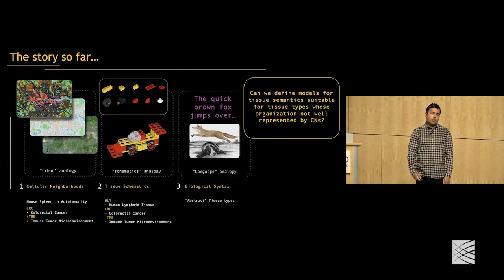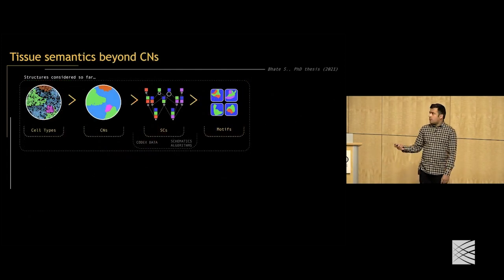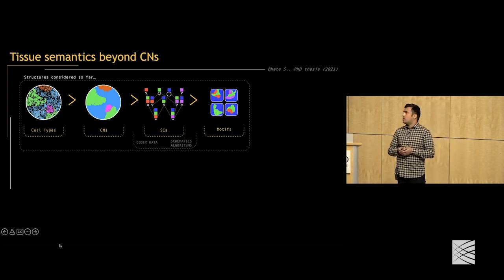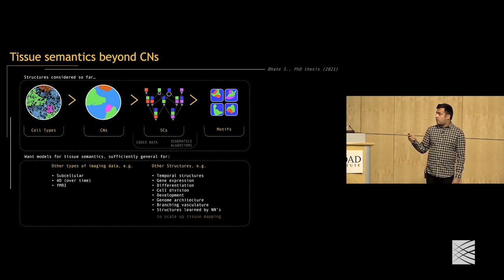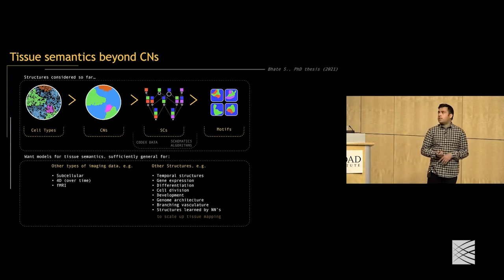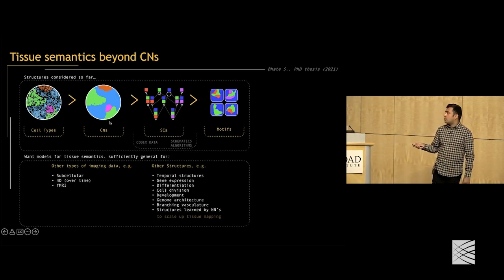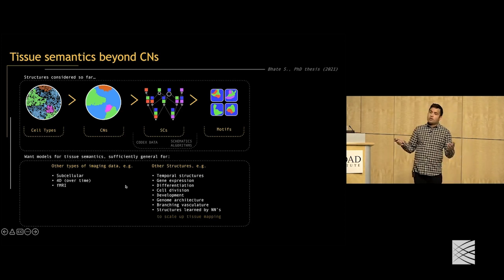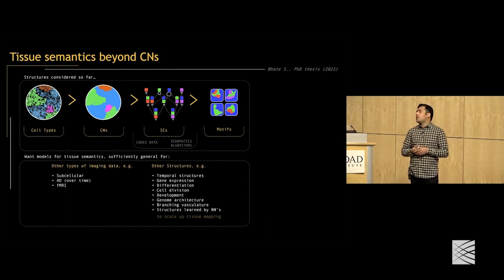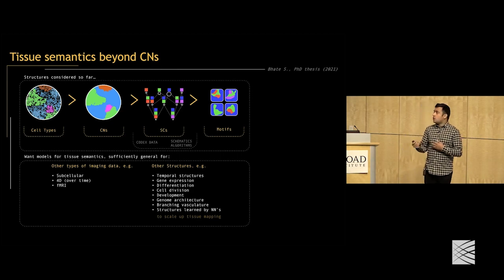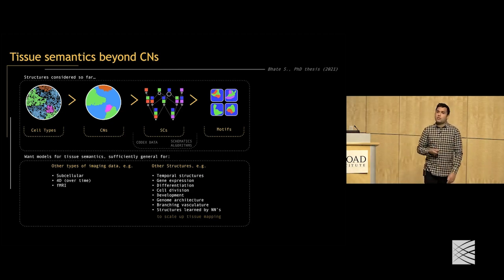Here we think about tissue types more abstractly in the context of biological syntax. The structures considered so far have been cell types, neighborhoods, spatial contexts, and motifs from CODEX data. We want models for tissue semantics general enough to address other types of imaging data — subcellular data, 4D time-series data, functional data — and other structures like temporal structures, gene expression, branching vasculature, or structures identified via unsupervised object detection. We want to still align tissues and understand which rules change across them.